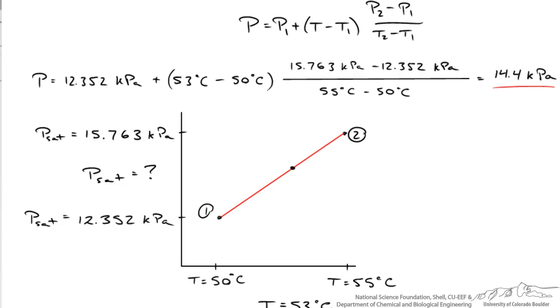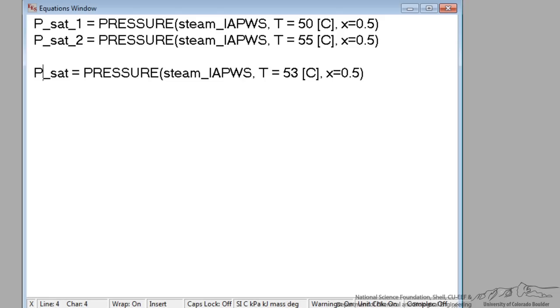So you would think well alright I will evaluate at 50 and 55 and I will evaluate this now at 53 and what I would expect would be 14.4 kilopascal. So here I have got a third line in EES. I am finding the pressure, same steam IAPWS, temperature 53 degrees C.